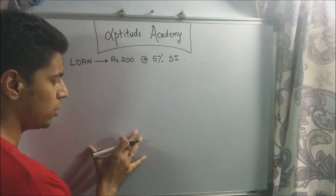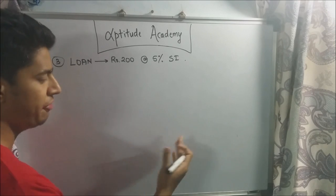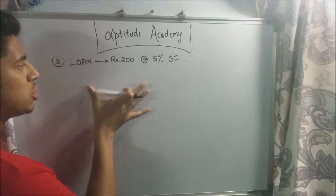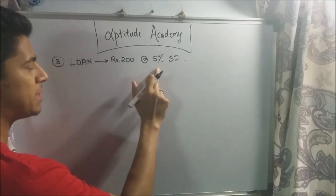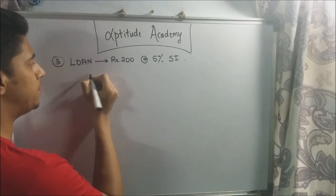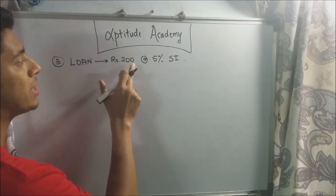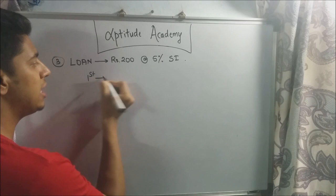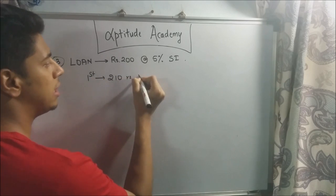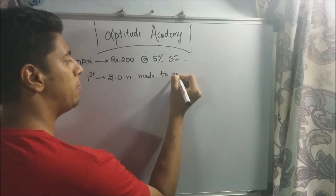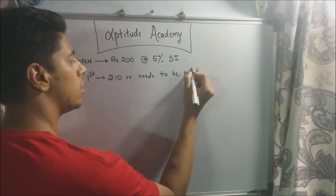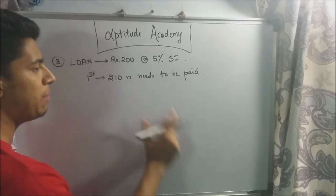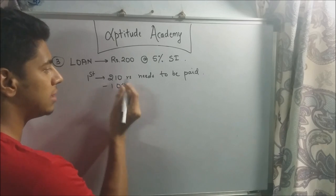They ask what is left to pay to clear everything at the end of two years. First, find how much he owes at end of year one. Five percent of 200 rupees is 10 rupees, so at the end of the first year he needs to pay 210 rupees. He pays only 100 rupees, so 210 minus 100 leaves a balance of 110 rupees.